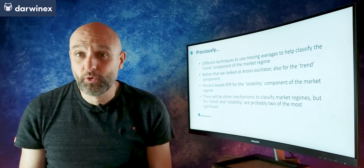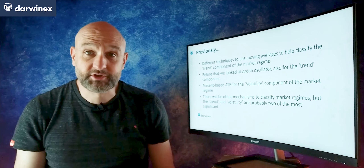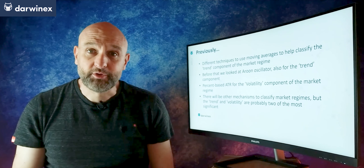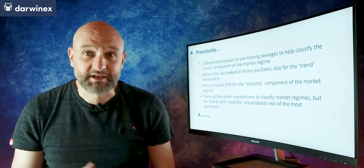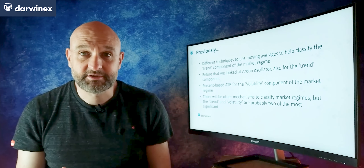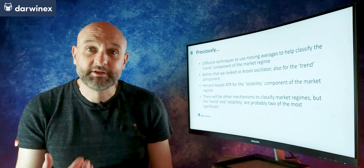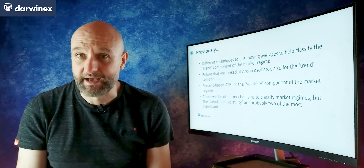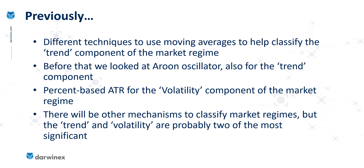There will of course be other characteristics of market regime that can also be classified. But the trend and volatility components tend to be the most significant in my own experience, and these have typically been the ones that have enabled me to make the biggest improvements in my algorithms. But if you do use other types of components to perform that categorization yourself, everything I'm going to speak about today could also be applied to those.